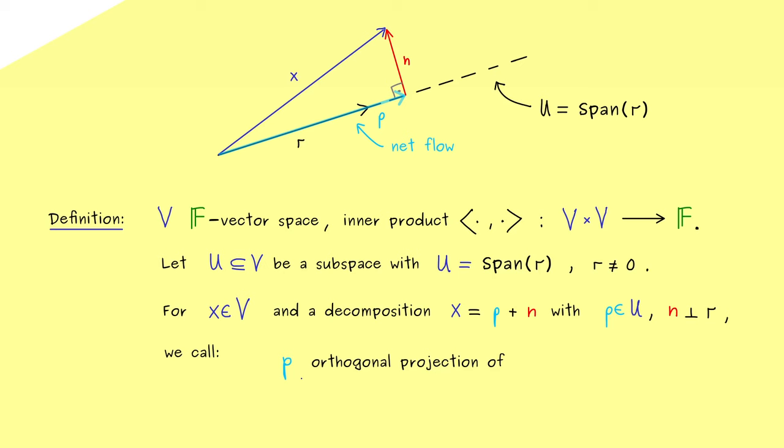But before we do that let's first write down the important names for the two vectors. So first p is called the orthogonal projection of x onto u. So of course orthogonal projection here only makes sense if we mention the subspace. And on the other hand n is called the normal component of x, and also here we would usually say with respect to the subspace u. Now these two names are very important so please remember them for the future.